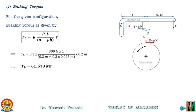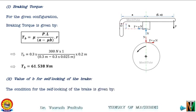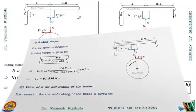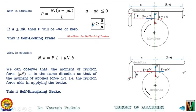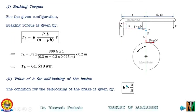Now finding the value of B for self-locking brake. The condition for self-locking is b ≥ a/μ. Substituting A = 0.3 and μ = 0.3: b ≥ 0.3 / 0.3 = 1 m. So B must be greater than or equal to 1 meter for this brake to be self-locking.